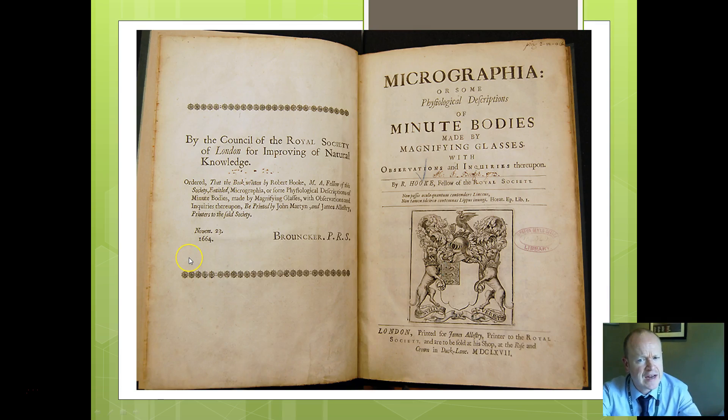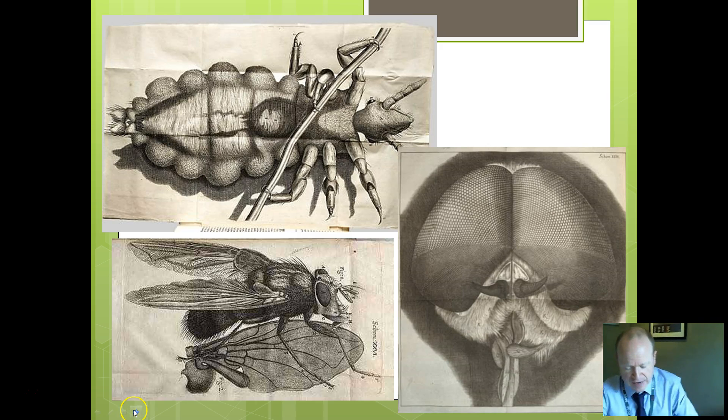With that, he then wrote a book called Micrographia, one of the fastest selling books of its time. People were fascinated to see things which they had never seen before, things that were microscopic. Looking at, for example, head lice, there's a lovely head louse shown here. A fly. And then Hooke was the first person to look at the fly's eye and realized it's called a compound eye, made of tiny little segments. People had never seen that before without using a microscope.